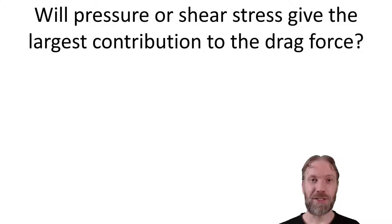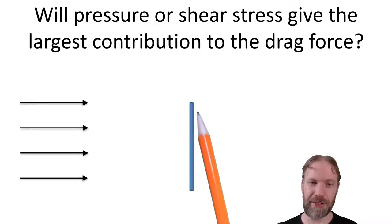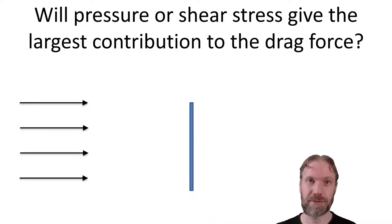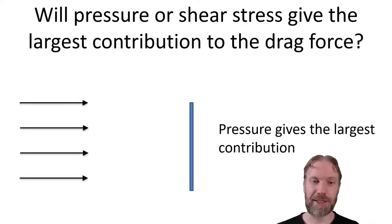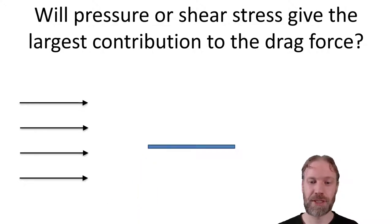Now the question is: what gives the biggest contribution - shear stress or pressure when we talk about the drag force? Let's take an example. The flow comes from the left, we put an object in the way. For this object, we have a very big area that the pressure can act on in the direction of the flow, but a very small area that the shear stress can act on. So in this case it's the pressure that is giving the drag force. Now if we turn the object, we have a very big area that the shear stress can act on, but a very small area that the pressure can act on.